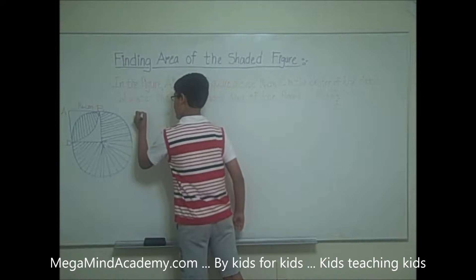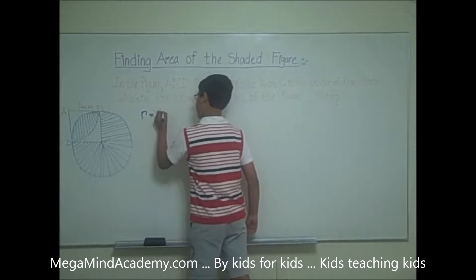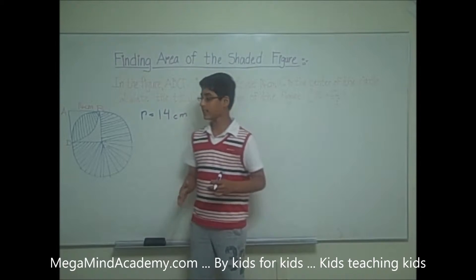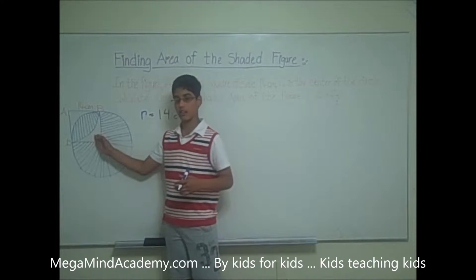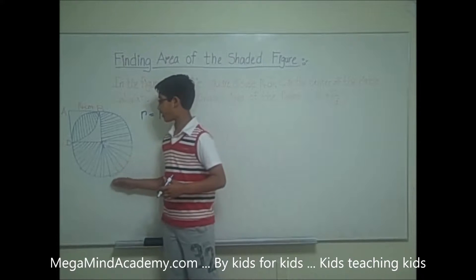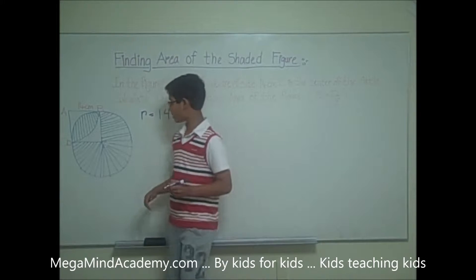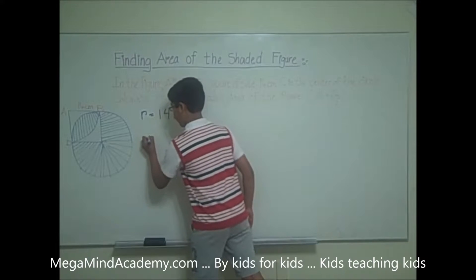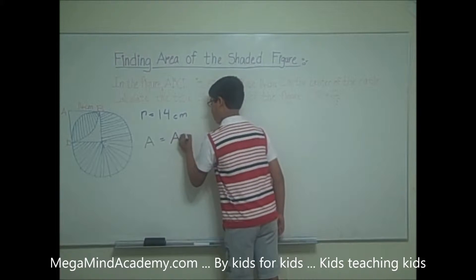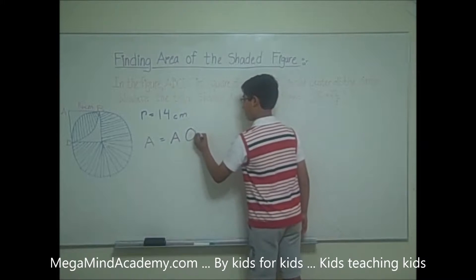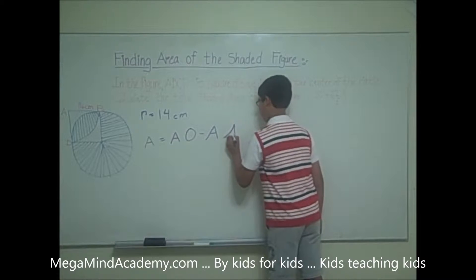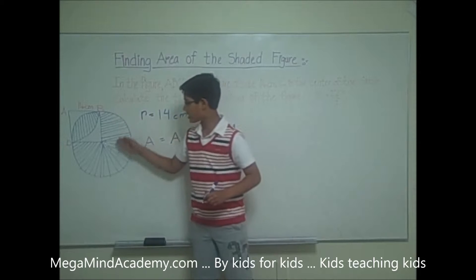So the radius is equal to 14 centimeters. Now, we can see that including this pseudo-triangle, this is a whole circle. To find the shaded area of this figure, we need to do: shaded area equals the area of the circle minus the area of the pseudo-triangle BCD.